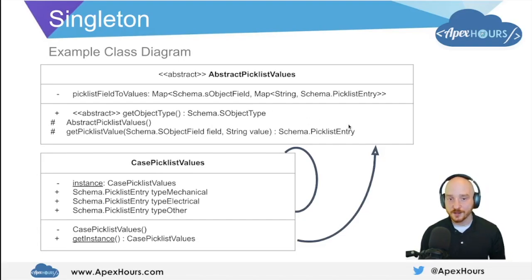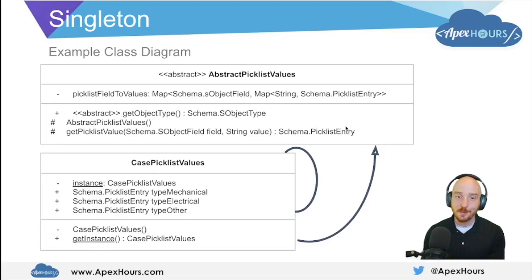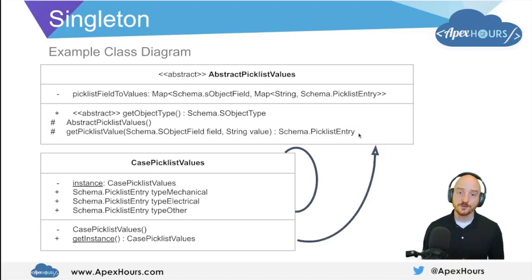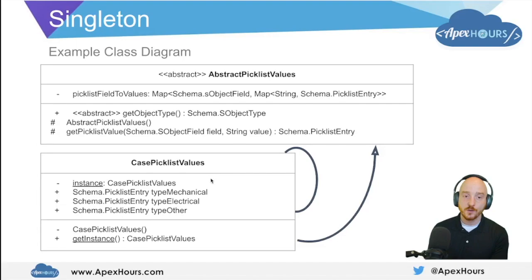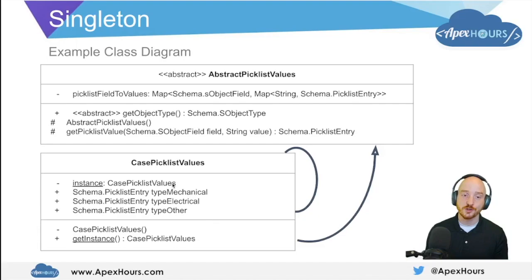We also have this protected method called 'getPicklistValue' which returns a Schema.PicklistEntry. You pass in the field, then you pass in the value — which will be the API name of the picklist value you're looking for — and it will return that PicklistEntry. All of that is at the abstract class level. Here we can see that CasePicklistValues is where we're implementing the singleton pattern. We've got a private instance variable called 'instance', a private constructor, and a public static method called 'getInstance' which will return that instance variable.